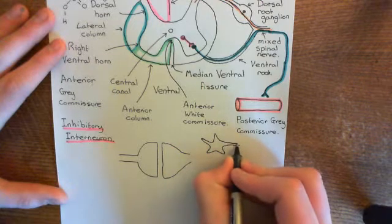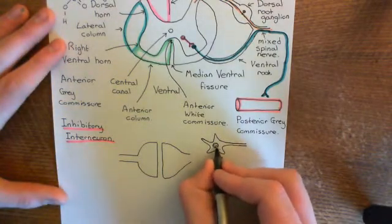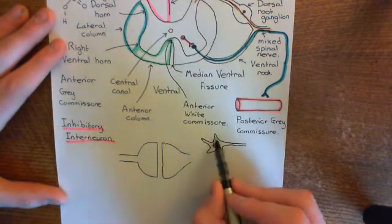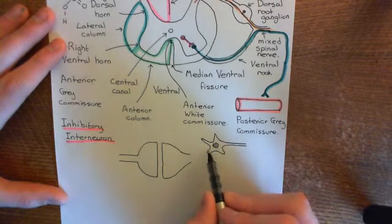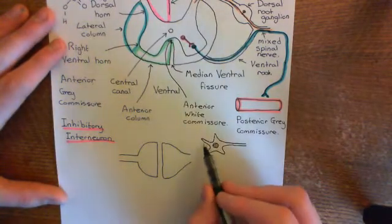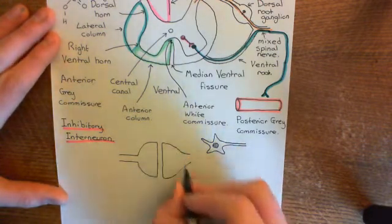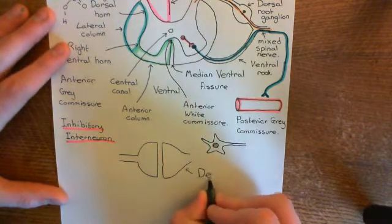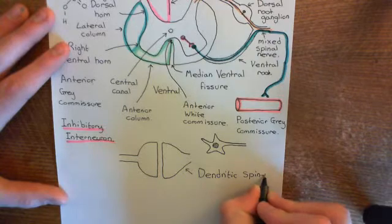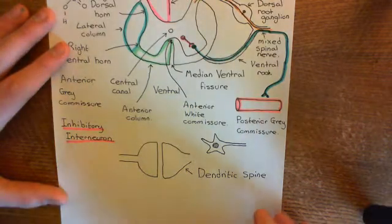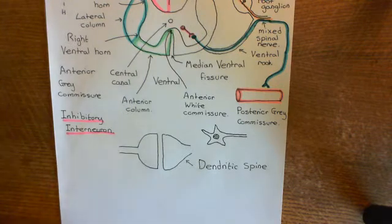Our alpha motor neuron will have loads of dendrites coming off its cell body, so it'll look like a starfish shape, and it'll have the axon coming off down here with its nucleus within the cell body. The dendrites stretch spanning off the cell body; however, the axon terminals of these inhibitory interneurons don't synapse directly onto the dendrites. Instead, the dendrites are covered in tiny little processes which come off them, known as dendritic spines — the little processes which actually interface with the axon terminals of inhibitory interneurons and many different types of neurons.